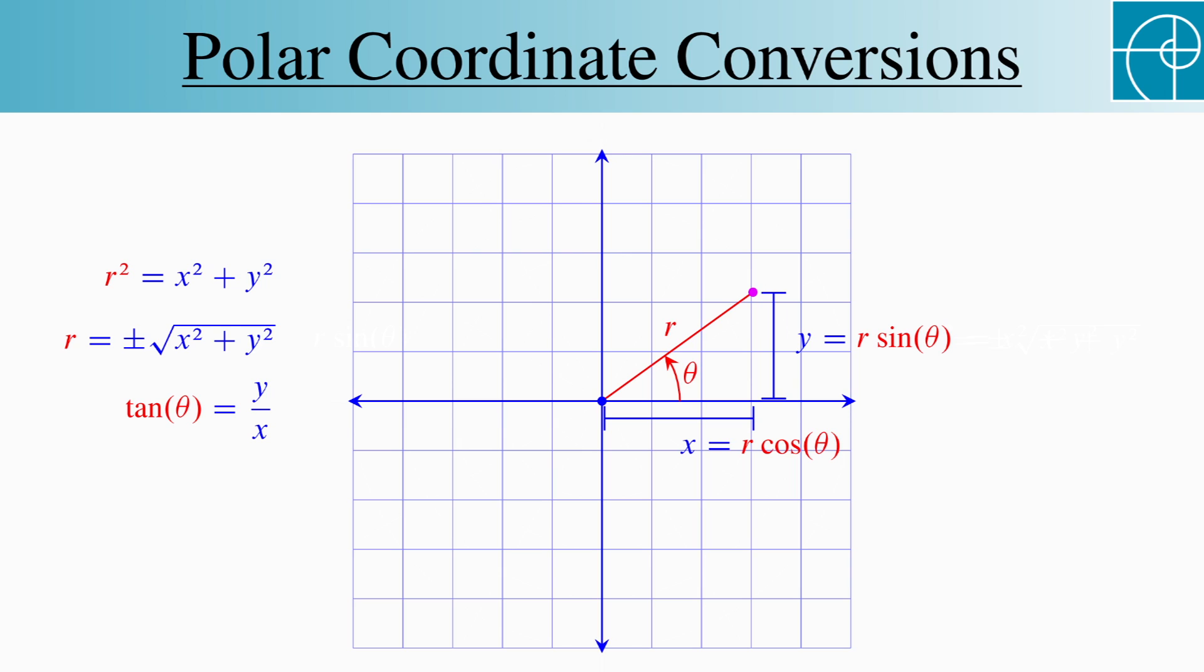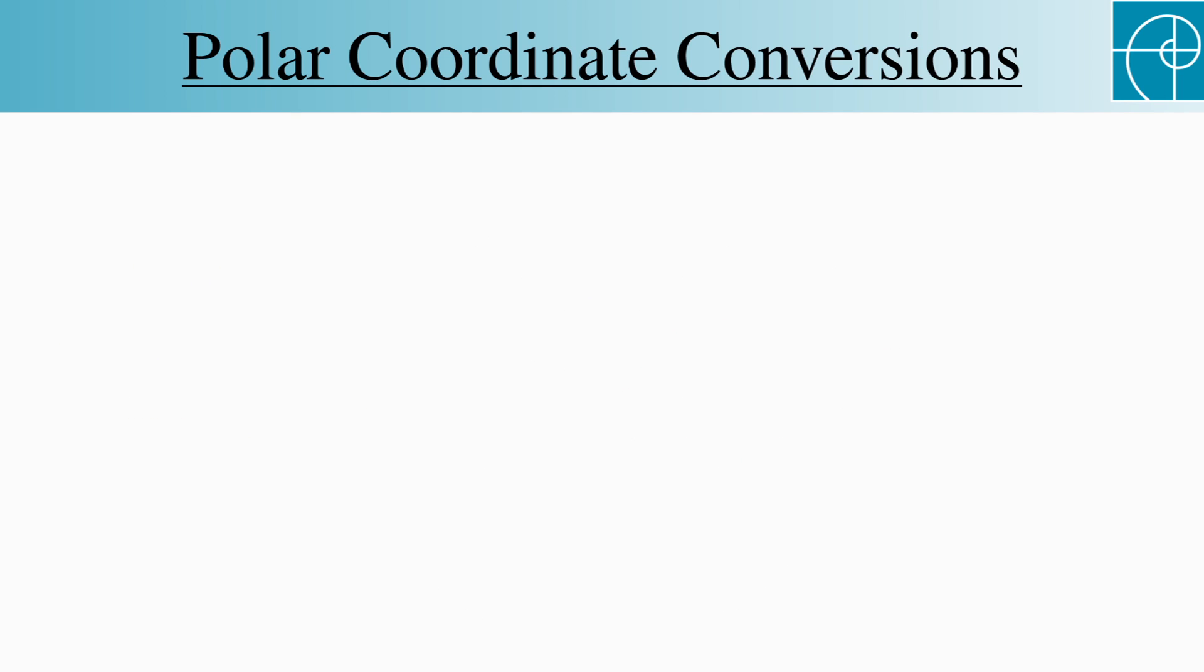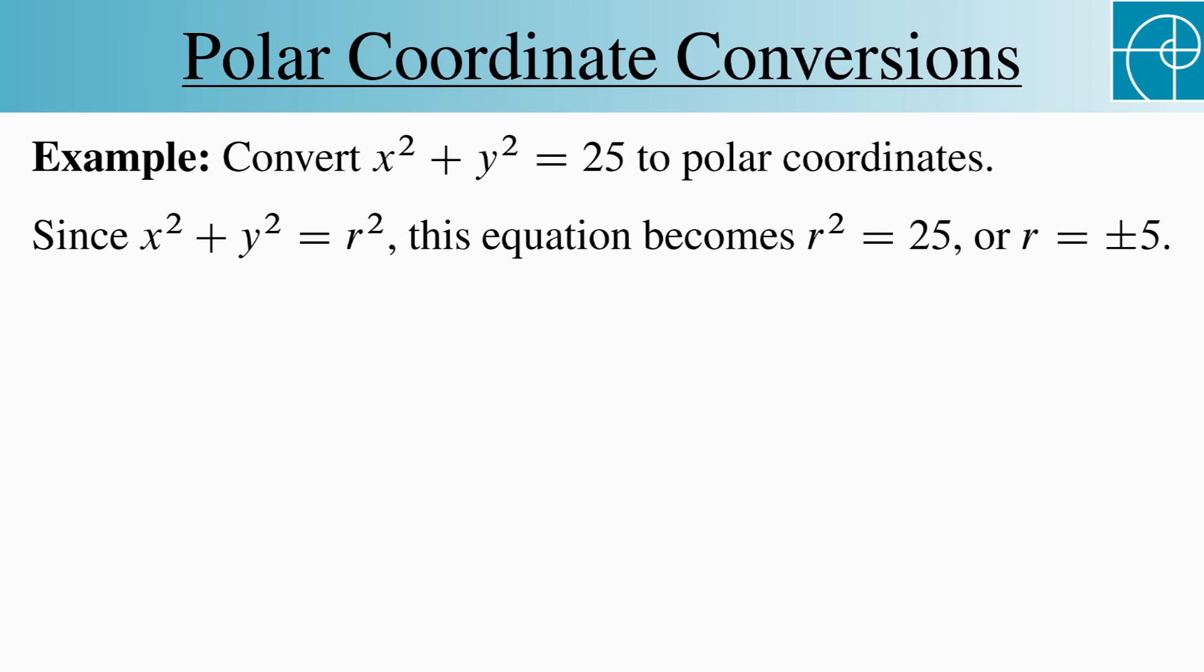Let's look at two examples. First, let's convert x squared plus y squared equals 25 into polar coordinates. Since x squared plus y squared equals r squared, we get r squared equals 25, or r equals plus or minus 5. This is a circle of radius 5 centered at the origin, which we should have already known by looking at the original rectangular equation.